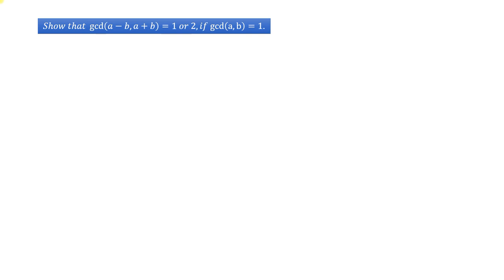If GCD of a, b equals 1, that means a and b are co-primes. So let us start.